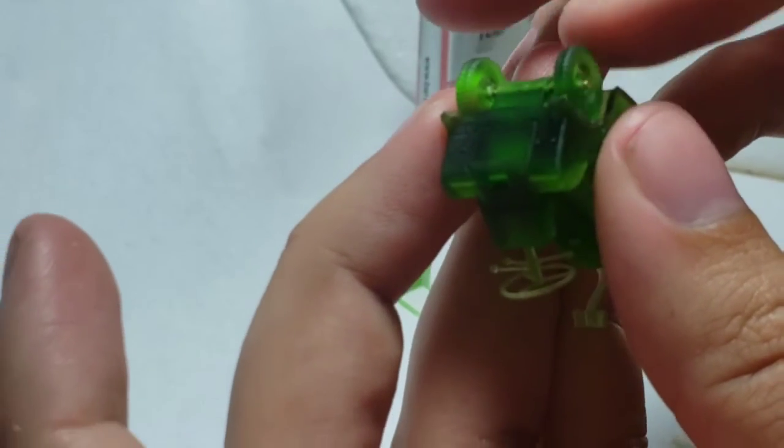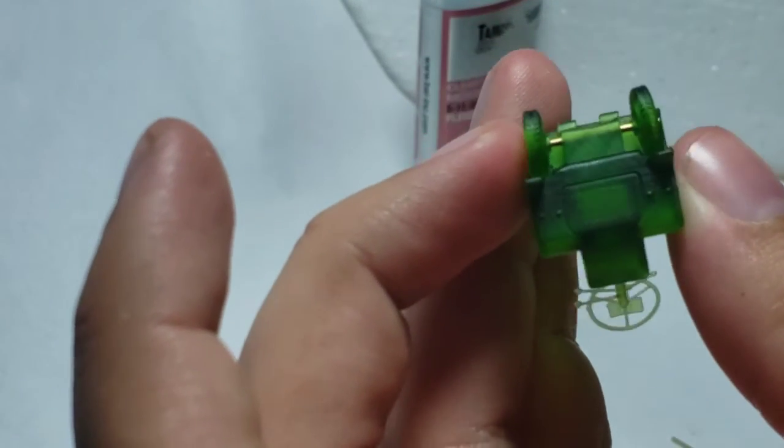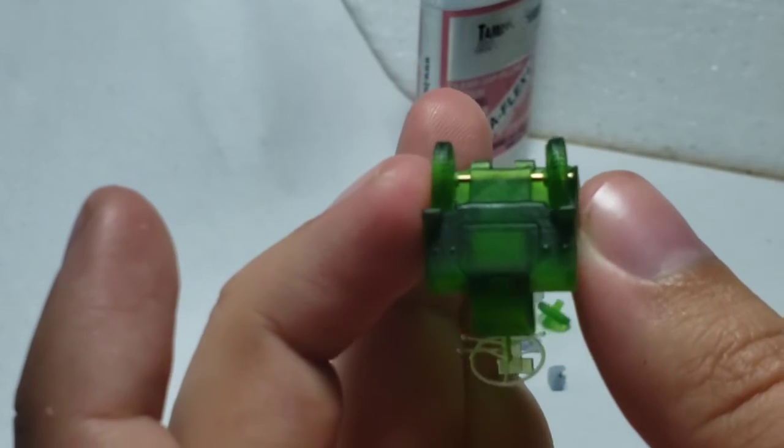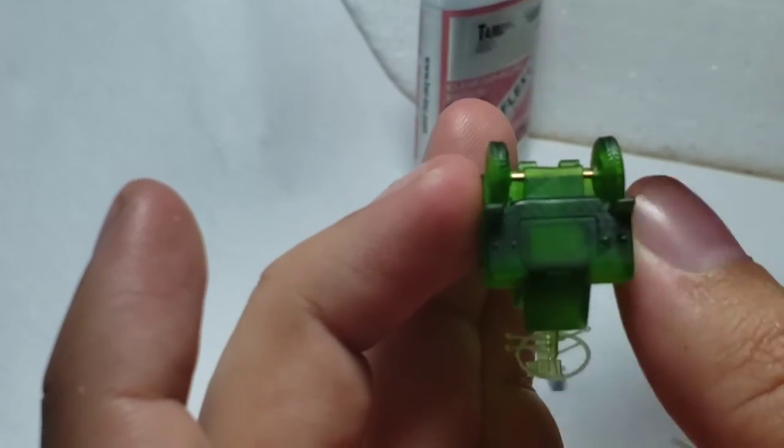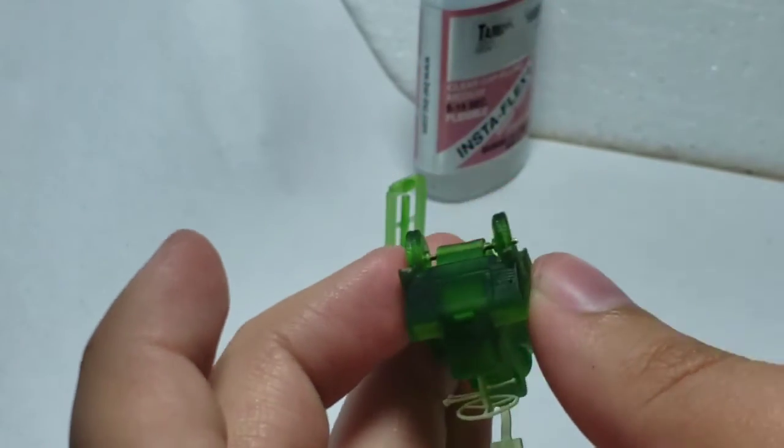These wheels spin, and you can glue them in place. Like I said, to make sure they roll right, just roll the wheels very gently so nothing seizes up.